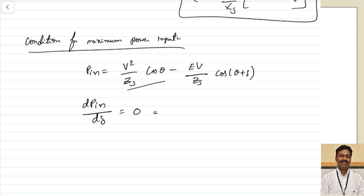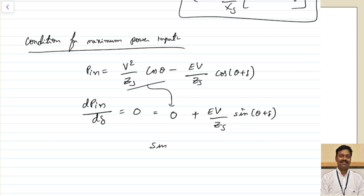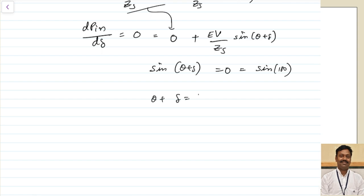Differentiating the second term: d/dδ [−(EV/Zs)·cos(θ + δ)] = (EV/Zs)·sin(θ + δ). Setting this equal to zero gives sin(θ + δ) = 0. Since θ cannot equal −δ, the valid solution is θ + δ = 180°, so the condition for maximum power input is δ = 180° − θ.